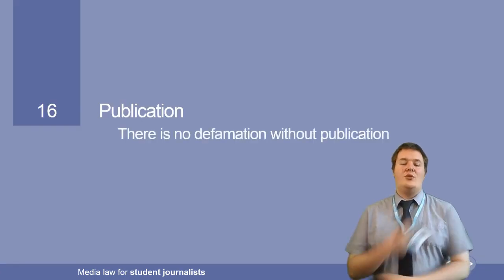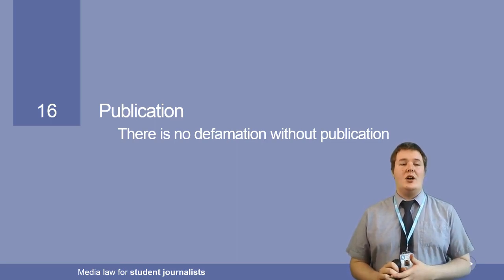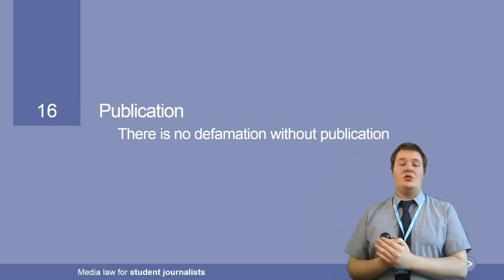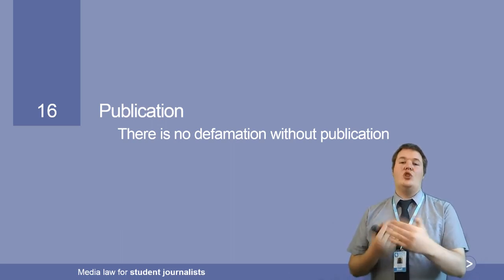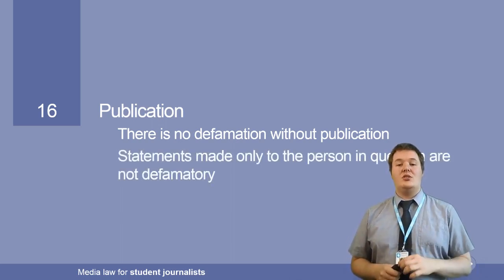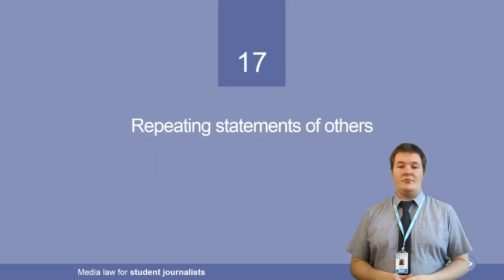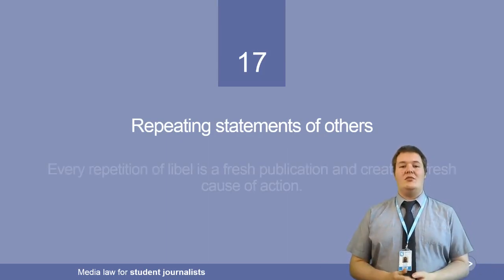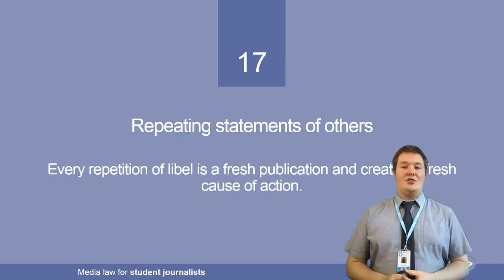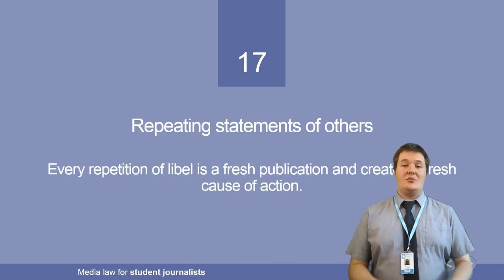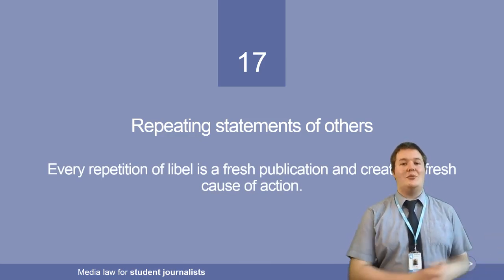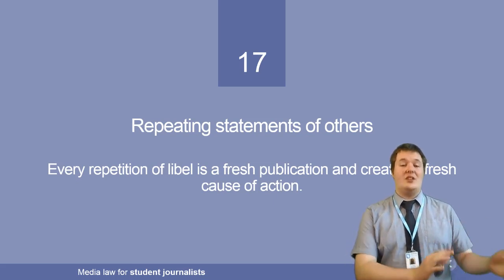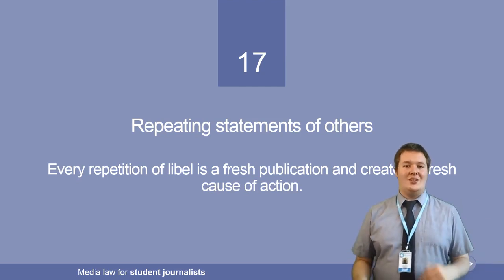There isn't any libel without publication. If it's only said between you and the person you are defaming, it's not libelous — it's only libelous when published to a third party. Repeating the statements of others is a common confusion. A lot of people think 'well, I didn't say it, they said it, I'm just saying what they said.' But every repetition of libel is a fresh publication and creates a fresh cause of action. So if someone says something defamatory and you put it in your newspaper, you are also making the defamatory statement. It is not a defence to argue you are only repeating the words of others.